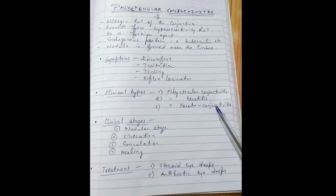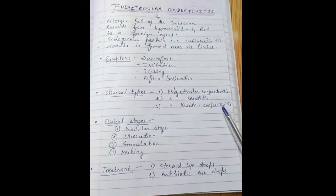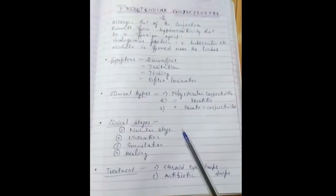Third is phlyctenular keratoconjunctivitis in which both cornea and conjunctiva are involved. Now we talk about the clinical stages.